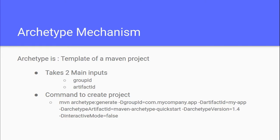To create Maven projects, Maven provides us a way or mechanism called the Archetype Mechanism. Let's understand what Archetype is. Archetype is like a template of a project in which Maven has defined the directory structure and minimal required form to get a ready-to-run project.